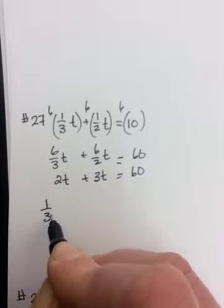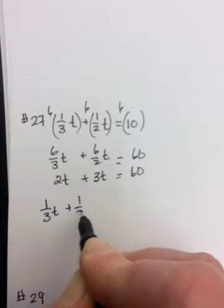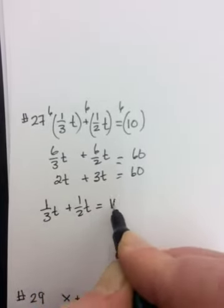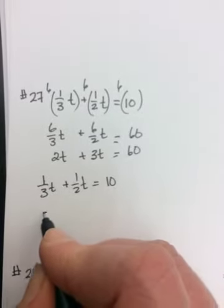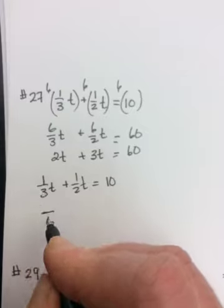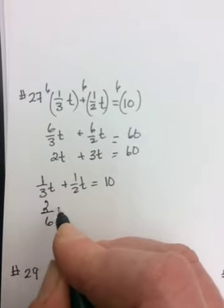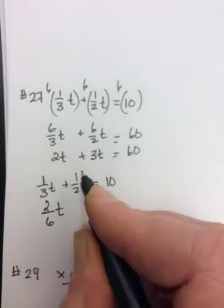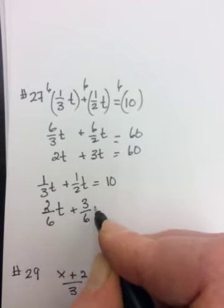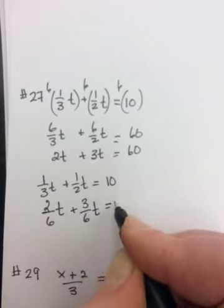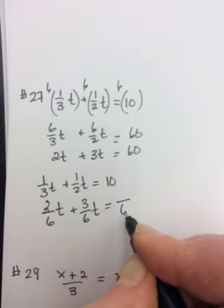I'm just going to go back to the original question and show you how it doesn't matter if you do that or if you change to a common denominator. So the common denominator here would be 6. So one-third is what over 6, it's 2 over 6. So this will be 2 over 6t. And one-half is what over 6, it's 3 over 6 is one-half. And then you also have to do the 10. 10 is what over 6, it's 60 over 6.